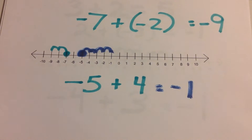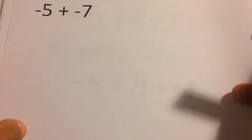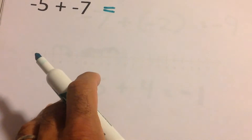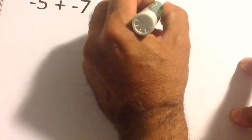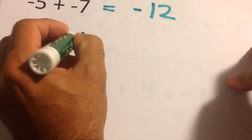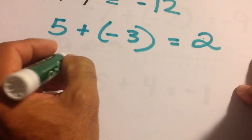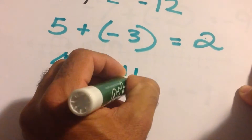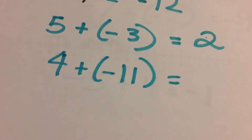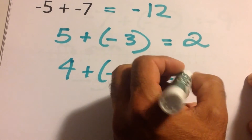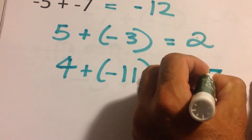There's another way to think about this without the number line — think of owing money. If you have negative five, that means you owe five dollars, and then you owe another seven dollars, so you owe twelve dollars total. Or if you have five dollars but owe three, you pay off the three and you have two left. Negative eleven plus four: you owe eleven but have four, so you pay off four and still owe seven.